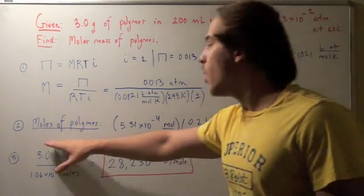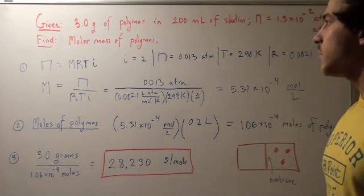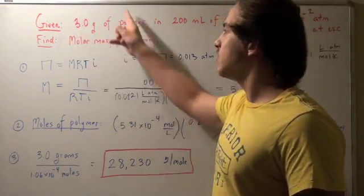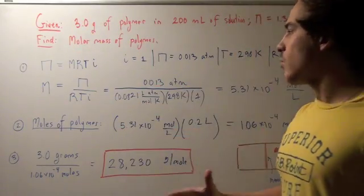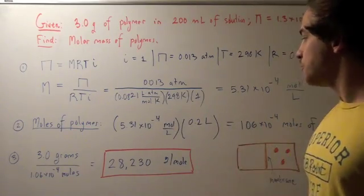Now, let's find the number of moles of polymer. If we find the number of moles of polymer, we could take our amount in grams, divide that by our moles, and we get molar mass or mass per mole.